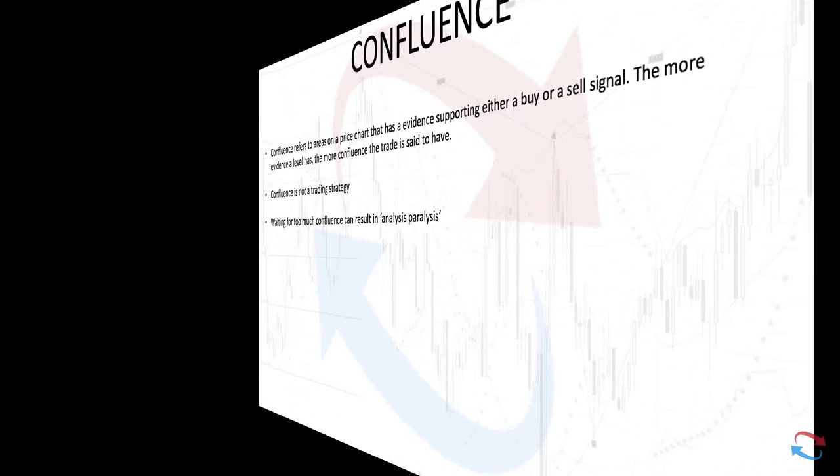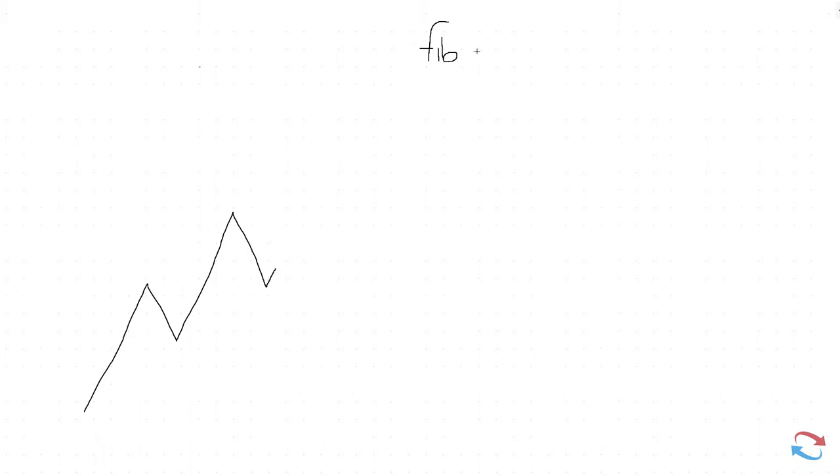Let's say you are a trend trader looking for a level to trade off of, and prices are making higher highs and higher lows. Your strategy for entering a trade requires you to see a Fibonacci level — maybe the 38.2, the 61.8 percent level, or even the 78.6 — a Fibonacci retracement level, as many traders use.